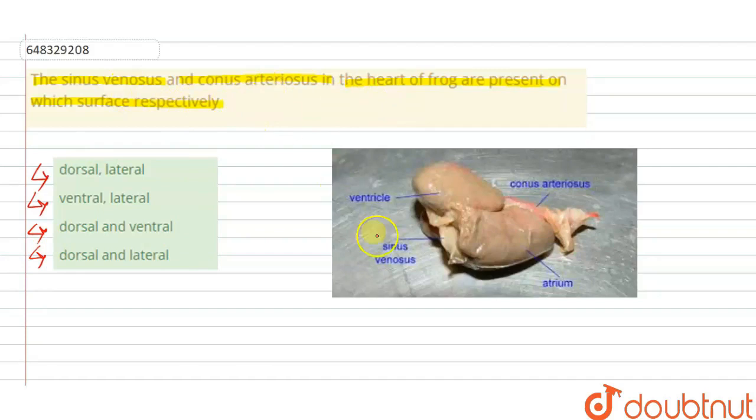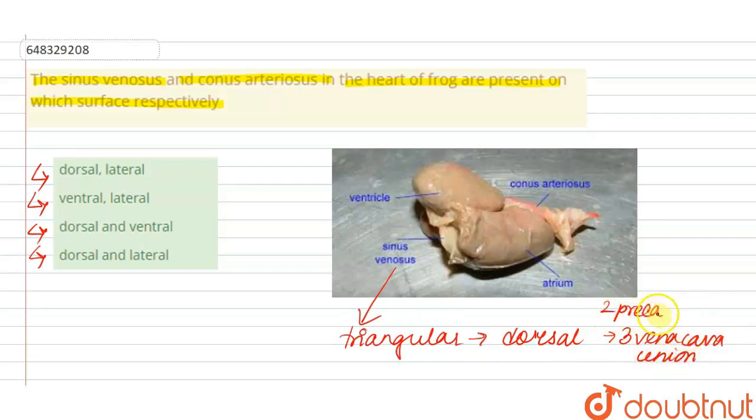Sinus venosus is a triangular chamber that is attached dorsally to the heart and it is formed by the union of three main venacava. These are the two pre-caval and one post-caval venacava. The sinus venosus receives blood from the body of the frog into the heart.